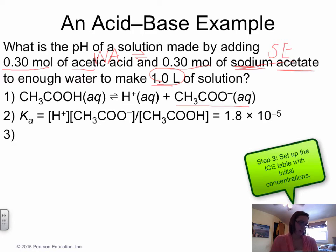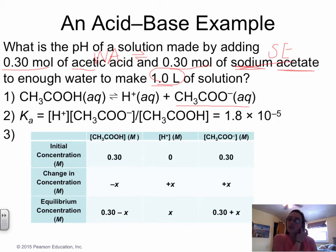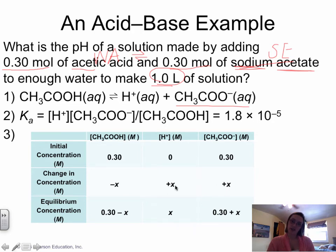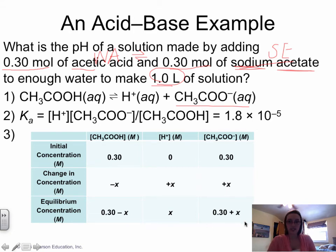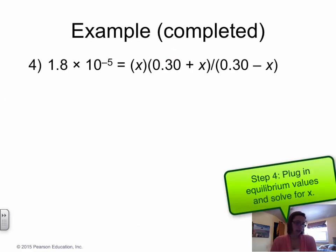Now we set up the ICE table with appropriate values. We have an initial concentration of 0.30 M for the acid and 0.30 M for the acetate ion from the salt. It's still minus x for the acid and plus x for the ions. Working down the table: equilibrium concentrations are 0.30 − x for acetic acid, x for H+, and 0.30 + x for acetate. Notice the 0.30 + x — that is the key difference from a standard problem.